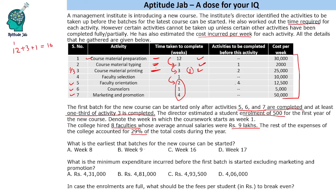Since the other activities are independent, we can start them simultaneously. So all these things can be done within 16 weeks. The batch can start in the 17th week — you need 16 weeks to complete everything, then only you can start on week 17.